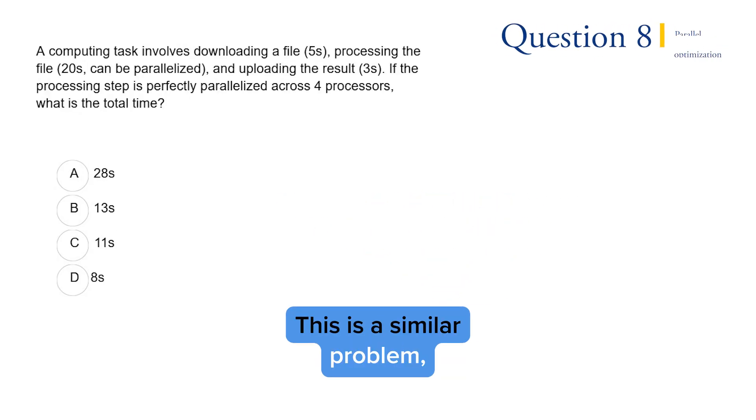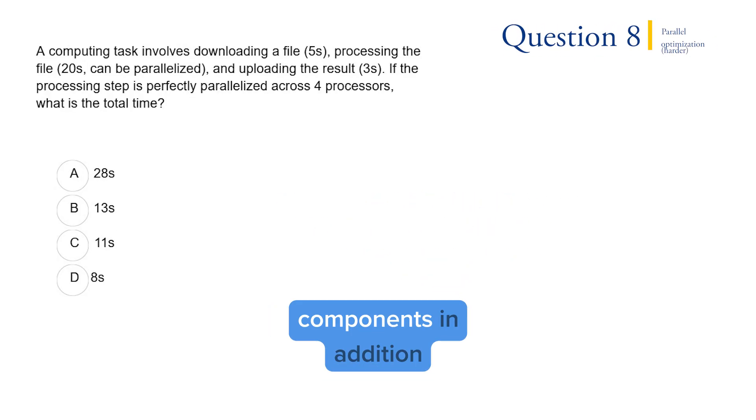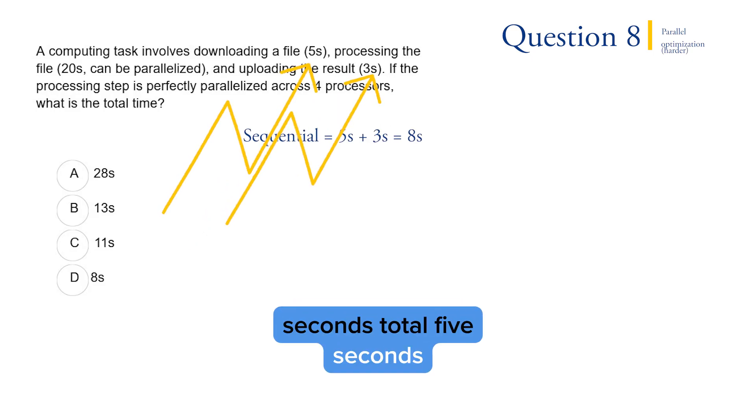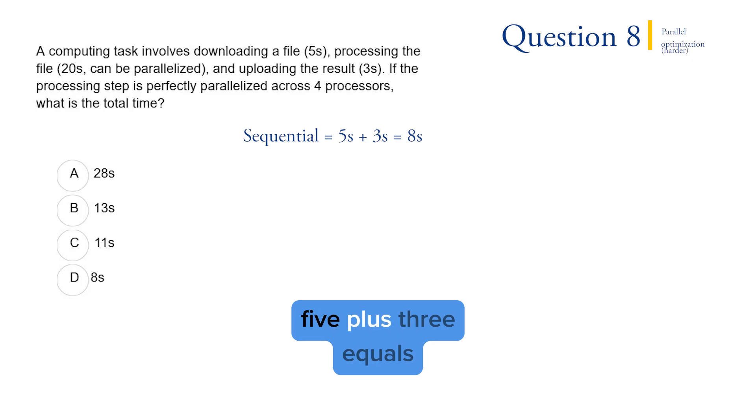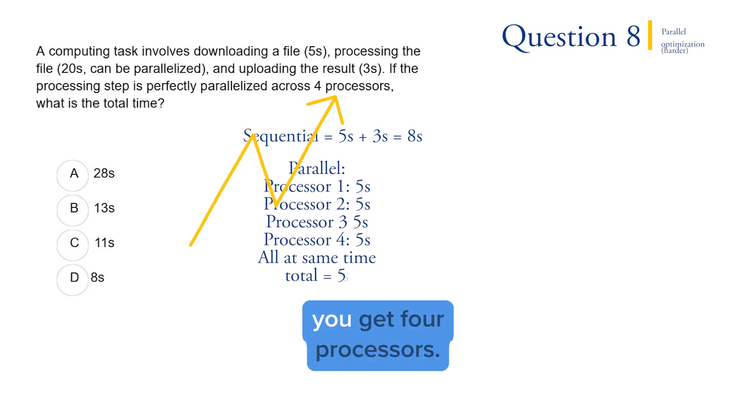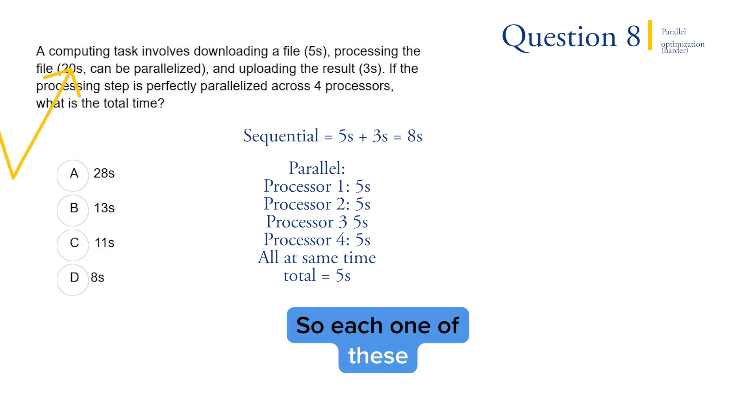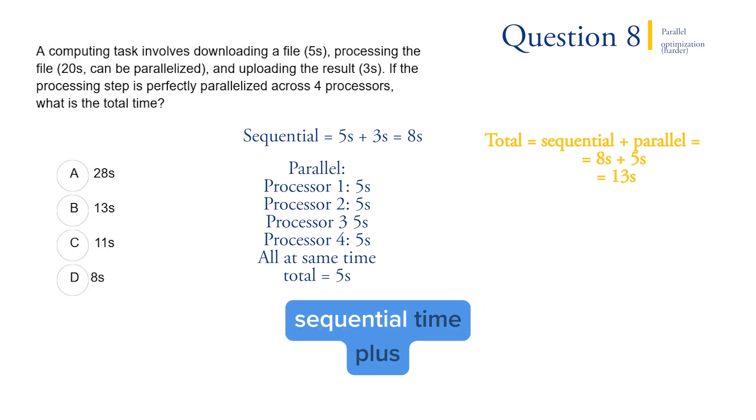Last question. This is a similar problem but slightly harder because now we have sequential components in addition to parallel components. Again, you've got to be careful. Pay attention to how many processors there are. The sequential part will take 8 seconds total: 5 seconds for downloading, 3 seconds for uploading. 5 plus 3 equals 8. Sequential is 8 seconds. Then you have a parallel part and they're saying you get 4 processors. So each one of these processors takes one quarter of this 20-second job, which means that each processor will take 5 seconds to complete. So the parallel part takes 5 seconds. Again, total time is sequential time plus parallel time. That means 8 seconds plus 5 seconds, which is 13 seconds. And so your answer is B.